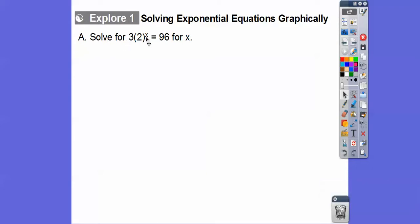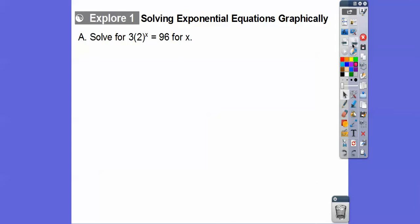So we're going to solve for x, and we'll first do it with a graphing method. We're going to solve where does it equal 96. One way is to first let f of x be this left side right here, and then we'll make a table. So f of x equals 3 times 2 to the x, and we'll complete the table for f of x. Here I've done the first one. So f of 1 is going to be 3 times 2 to the 1 power, and 2 to the 1 power is 2, so 3 times 2 is 6. So that's where this 6 came from.